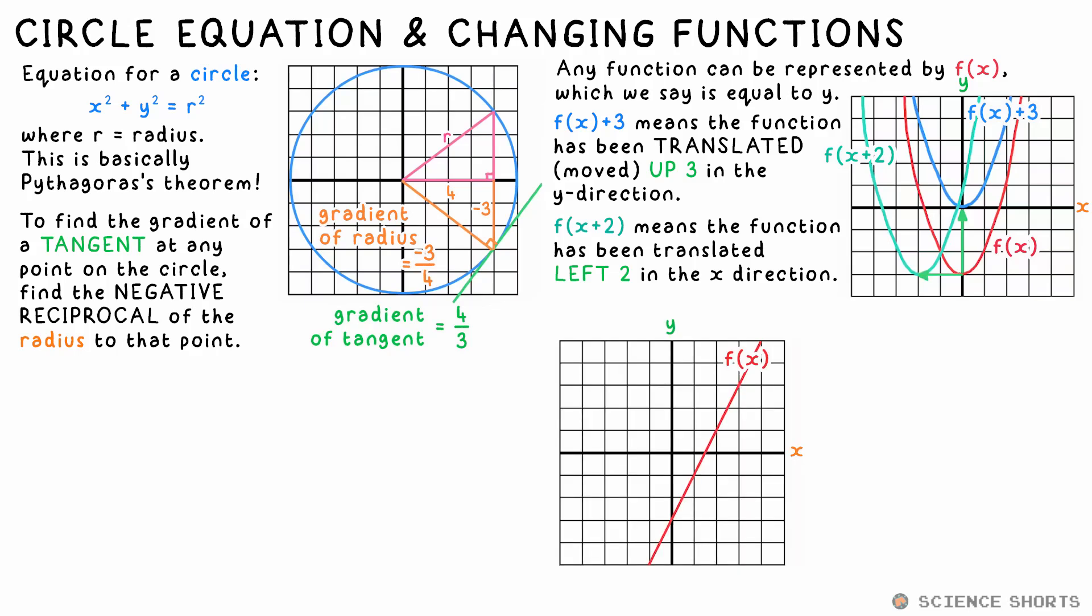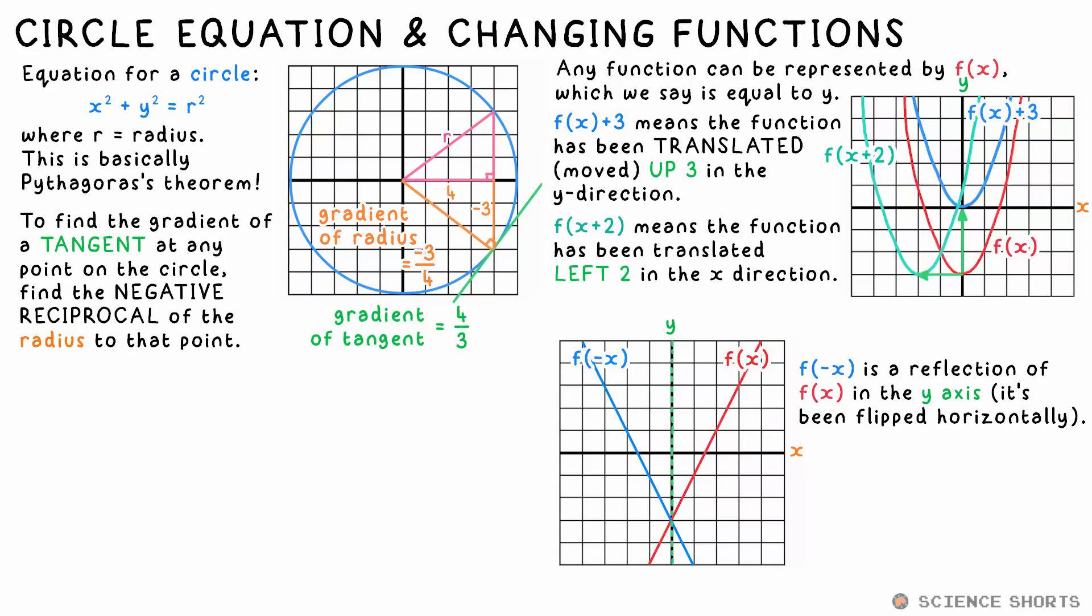A reflected function is just the result of sticking a minus in front of the function, or the x. F of minus x is the reflection in the y axis, while minus f of x is the reflection in the x axis.